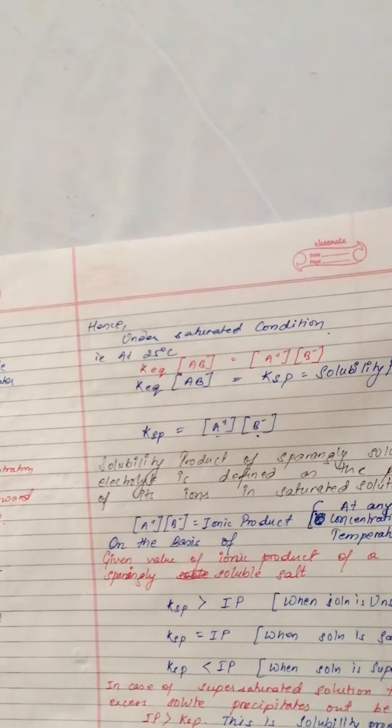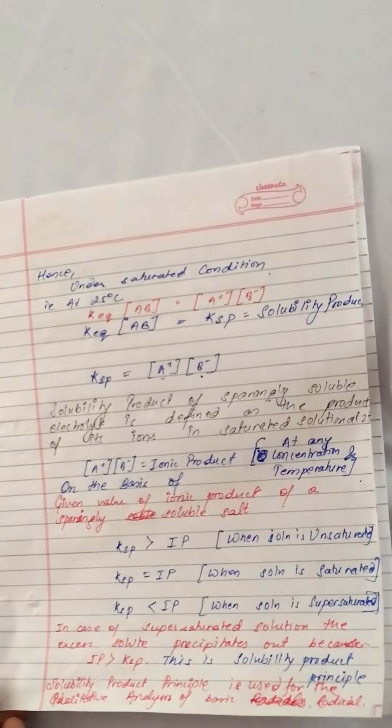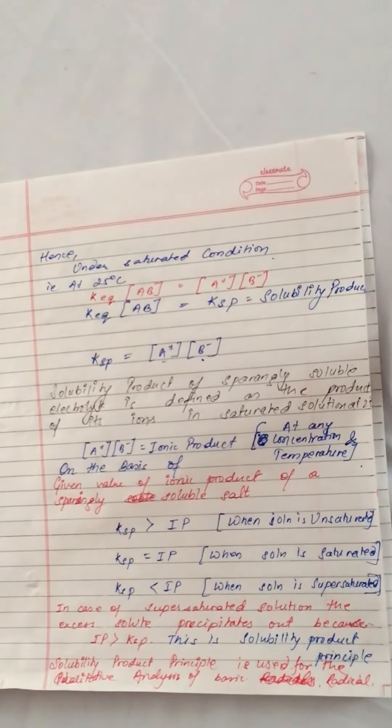Solubility product of a sparingly soluble electrolyte is defined as the product of its ions in saturated solution at 25 degrees Celsius.